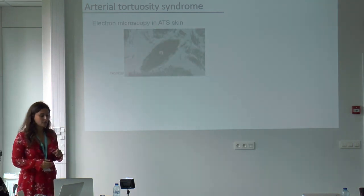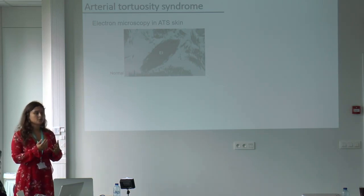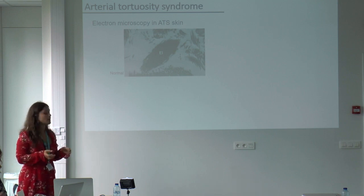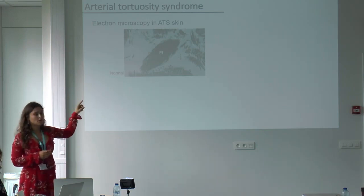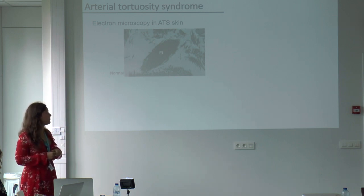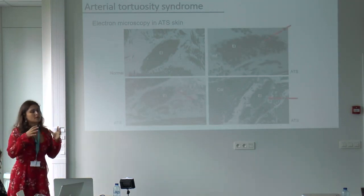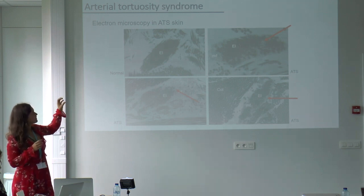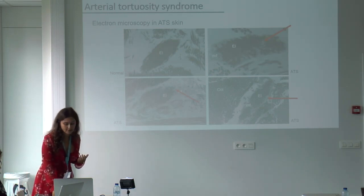We also performed electron microscopy in the skin of arterial tortuosity patients. Electron microscopy allows you to look at cells at a very large magnification, with far greater resolution than normal stainings. Here we see a single elastic fiber — it consists of a black core surrounded by microfibrils, which are small molecules around the elastic fiber. However, in patients with arterial tortuosity syndrome, the core isn't in continuity with the microfibrils. It's much more loose and the black is formed more in globules, so it isn't connected anymore. That's why we think it has to do with elastic fibers in the body.